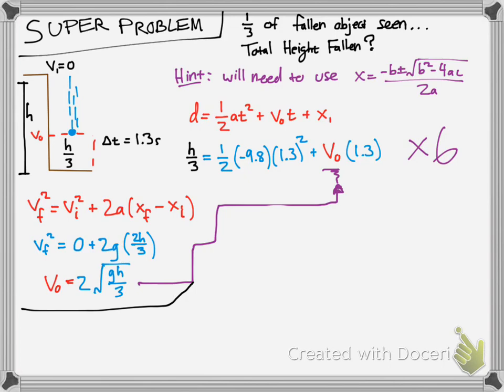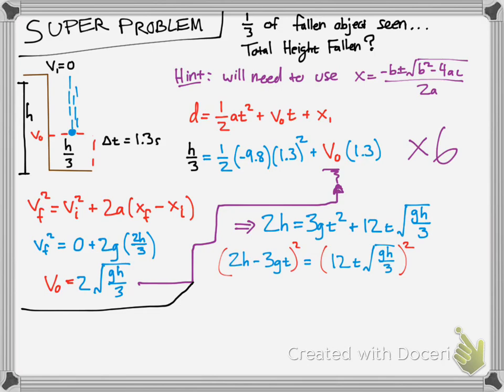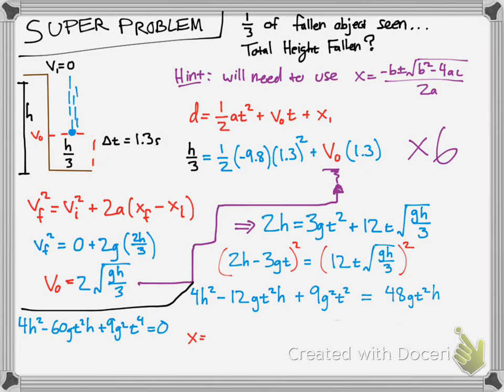Plug in those values. To make the math easier, let's multiply everything by 6 to get rid of all the fractions. You get 2h = 3gt² + 12t√(gh/3). Let's get rid of that square root by squaring both sides. You get this long math equation. Get all the sides, combine like terms, and get 0 on the other. Then you use the quadratic formula and plug everything in.